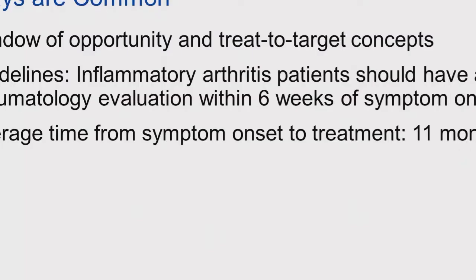Patients with rheumatoid arthritis need to be treated quickly, but long delays are common. We have the concepts of windows of opportunity and treat-to-target, and we know from several research studies that earlier and more aggressive treatment prevents long-term damage and achieves better disease control. Some guidelines recommend that inflammatory arthritis patients should have a rheumatology evaluation within six weeks of symptom onset, but the average time from symptom onset to treatment can be 11 months.